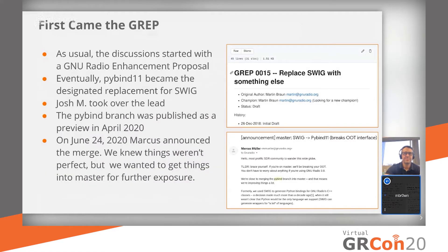So how did we actually reach the conclusion? Big changes like these, we don't just drop them onto the code base. This started almost two years ago with a GREP. GREPs are our usual way of suggesting or introducing big changes. This is GREP number 15, originally called 'Replace SWIG with something else,' posted by myself really as a suggestion — it didn't have a lot of content at the time. We take our GREPs seriously, and we looked around and found that PyBind11 was a suitable tool. Josh actually volunteered to take over the lead of this really massive change.